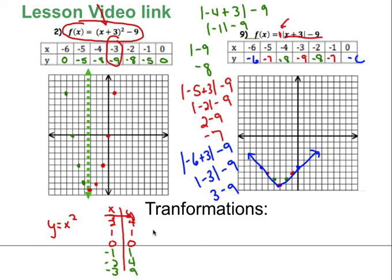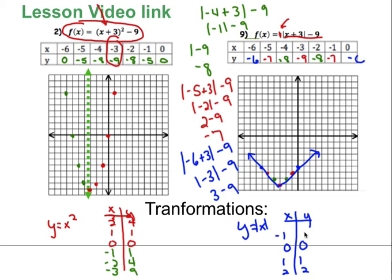Transformations show where the function moves from the parent function. The parent function for the absolute value of x has points at: (0, 0), (1, 1), (2, 2), (negative 1, 1), and (negative 2, 2) — so everything just takes the absolute value.